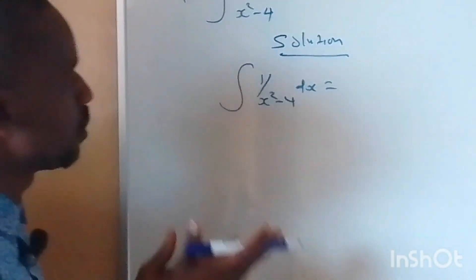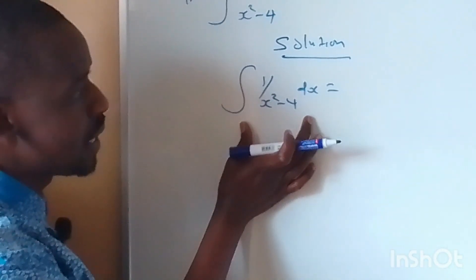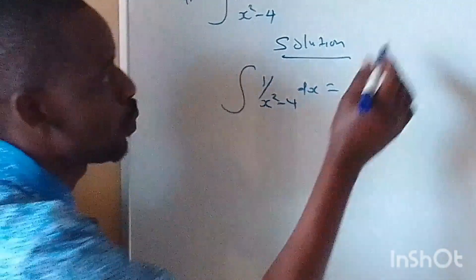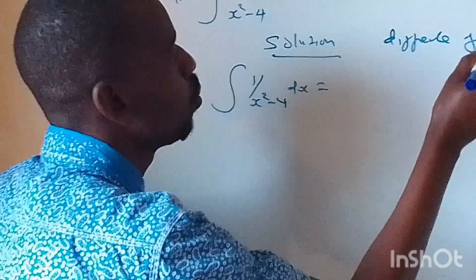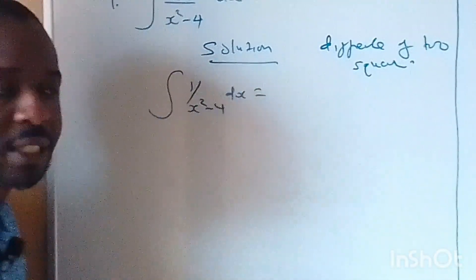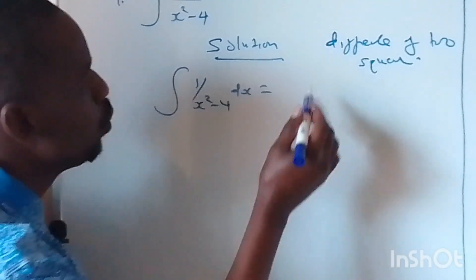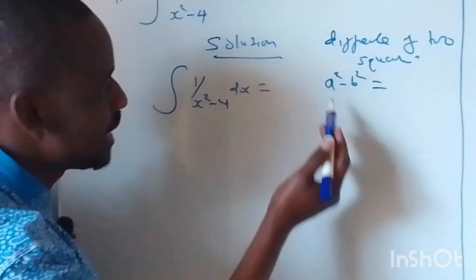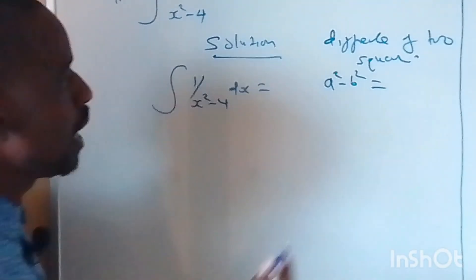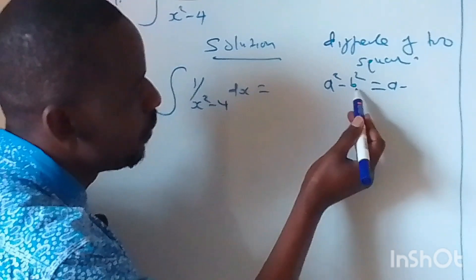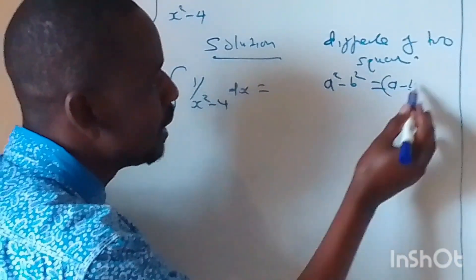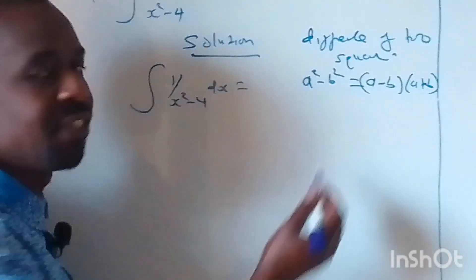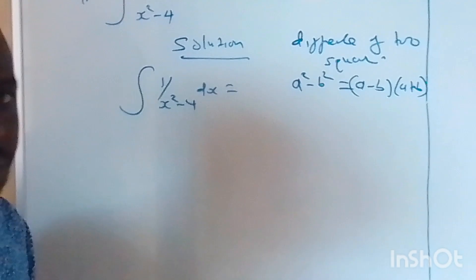The first step when given such an equation is to decompose — break it into two. Whatever we have, x squared minus 4, is the difference of two squares. Using the third identity of factorization, a squared minus b squared equals (a minus b)(a plus b), you take the square root of each element. So x squared minus 4 factorizes as (x minus 2)(x plus 2).